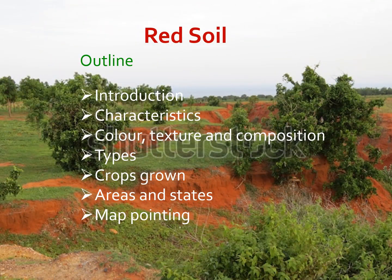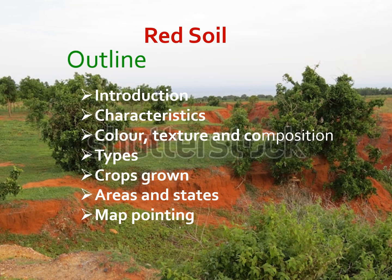Red soil — and the outline of the topic is: introduction, characteristics of red soil, color, texture and composition, types of red soil, crops grown, areas and states where red soil is found, and at the end, map pointing. Let's learn the topic in detail now.